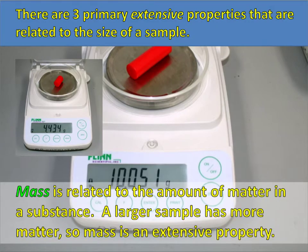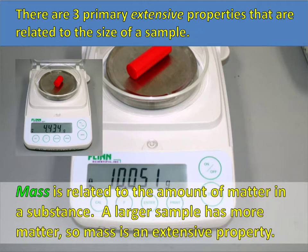There are three kinds of extensive properties. If they're extensive, they are related to how big or small that sample is — related to its size. The first kind is called mass. Mass is not really a weight; weight only depends on gravity. Mass is really how much matter is in an object or a substance. So when you put something on a scale, what you're really getting is how much matter is in that object or substance. The bigger the substance, the more matter it has. Mass is an extensive property because it is related to size and to amount.